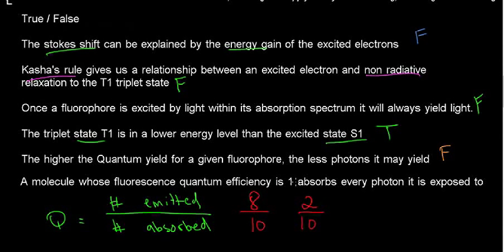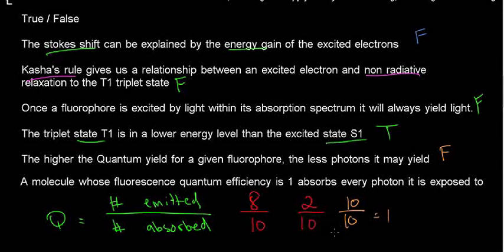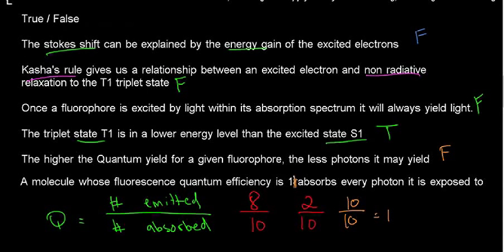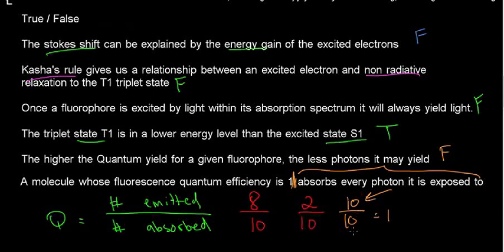A molecule whose fluorescence quantum efficiency is 1 — which really means quantum yield of 1 — absorbs every photon it is exposed to. A quantum yield of 1 means that the number of photons emitted equals the number absorbed, e.g., 10 over 10. What does this mean? It means if I absorb 10 photons, I emitted 10 photons. But the statement says it absorbs every photon it is exposed to — a quantum yield of 1 tells us about the ratio of emitted to absorbed, not how many photons it absorbs in total.